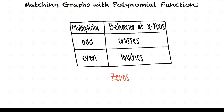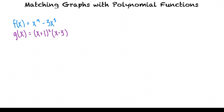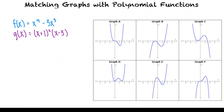To get a better understanding of what all of these things mean, let's try an example problem. Say we're given two functions: f(x) equals x to the fourth minus three x cubed, and g(x) equals the quantity x plus one squared times the quantity x minus three. We need to choose the graph of each function from the choices given. We'll start with the first function f(x) equals x to the fourth minus three x cubed.